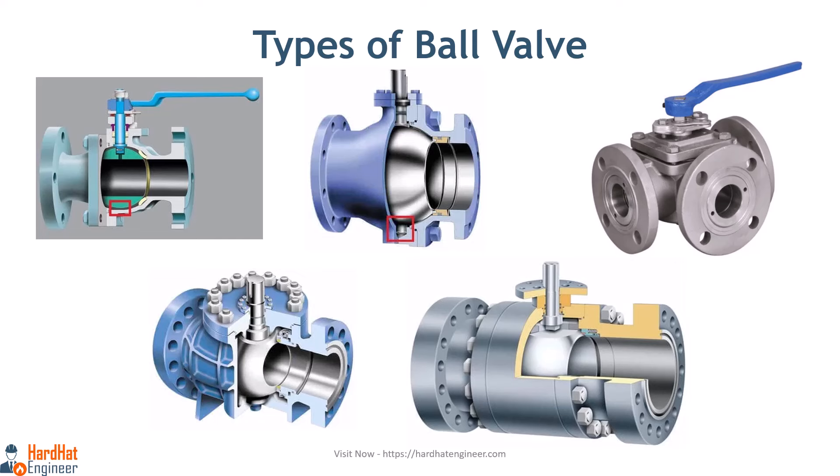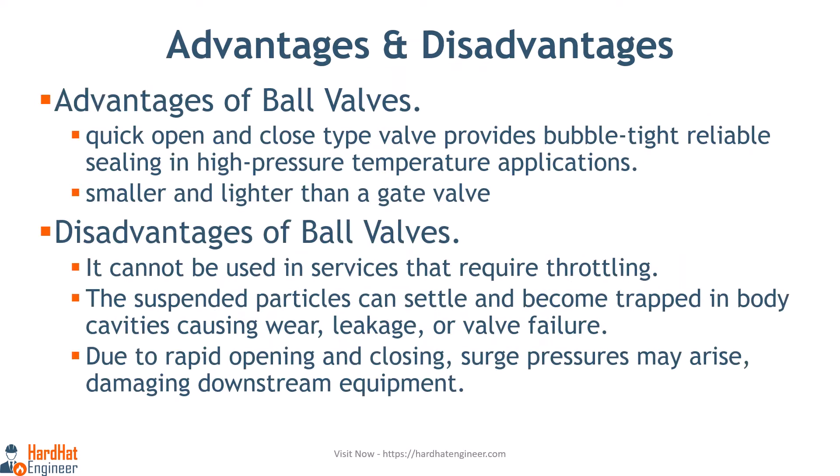There are different types of ball valves available, such as floating, trunnion-mounted, three-way, top entry, side entry or split body, and three-piece body design. The selection depends on the application. Advantages: it is a quick open and close, tight valve providing bubble-tight reliable sealing in high pressure and temperature applications. It is smaller and lighter than a gate valve of the same size and rating.